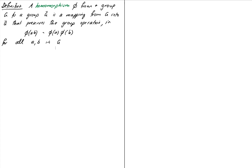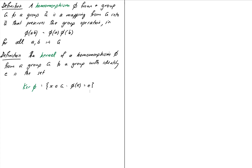The fact that we don't need it to be one-to-one and onto means that other things can happen — for example, we're allowed to have two elements in G mapping to the same element in G-bar. We need a bit more terminology to deal with things like this, and the concept that helps is the idea of a kernel.